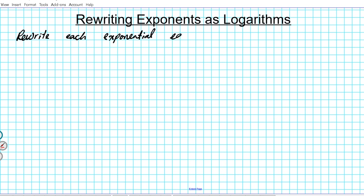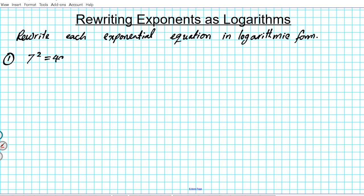The instructions are: rewrite each exponential equation in logarithmic form. The first example is seven raised to the second power equals 49, and we have to write this exponential equation in its equivalent logarithmic form.